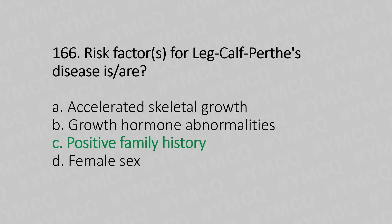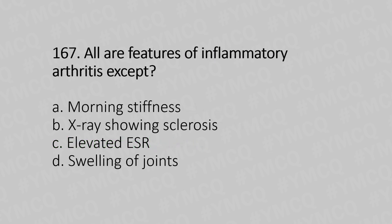Question 167: All are features of inflammatory arthritis except — Option A: Morning stiffness, Option B: X-ray showing sclerosis, Option C: Elevated ESR, Option D: Swelling of the joints. And the answer is Option B, X-ray showing sclerosis.